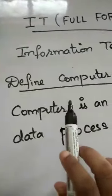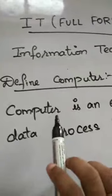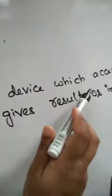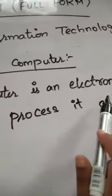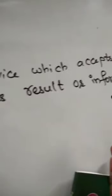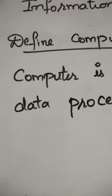The definition of computer: a computer is an electronic device which accepts data, processes it, and gives result or information. This is the definition of computer.